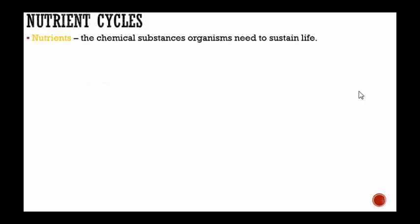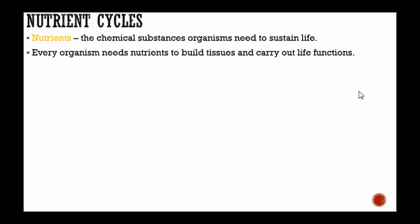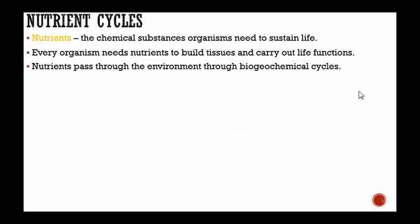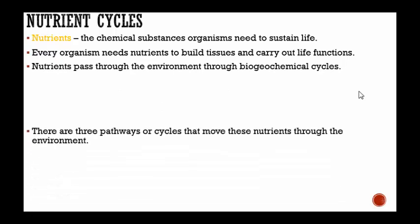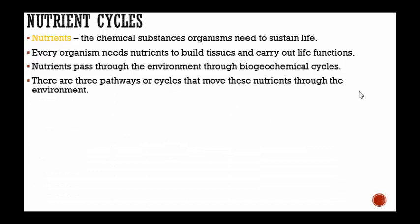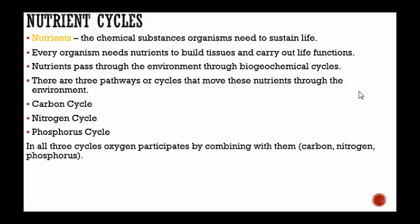Nutrient cycles — nutrients are the chemical substances organisms need to sustain life. Every organism needs nutrients to build tissues and carry out life functions. Nutrients pass through the environment through biogeochemical cycles. There are three pathways: the carbon cycle, the nitrogen cycle, and the phosphorus cycle. In all three cycles, oxygen participates by combining with carbon, nitrogen, and phosphorus.